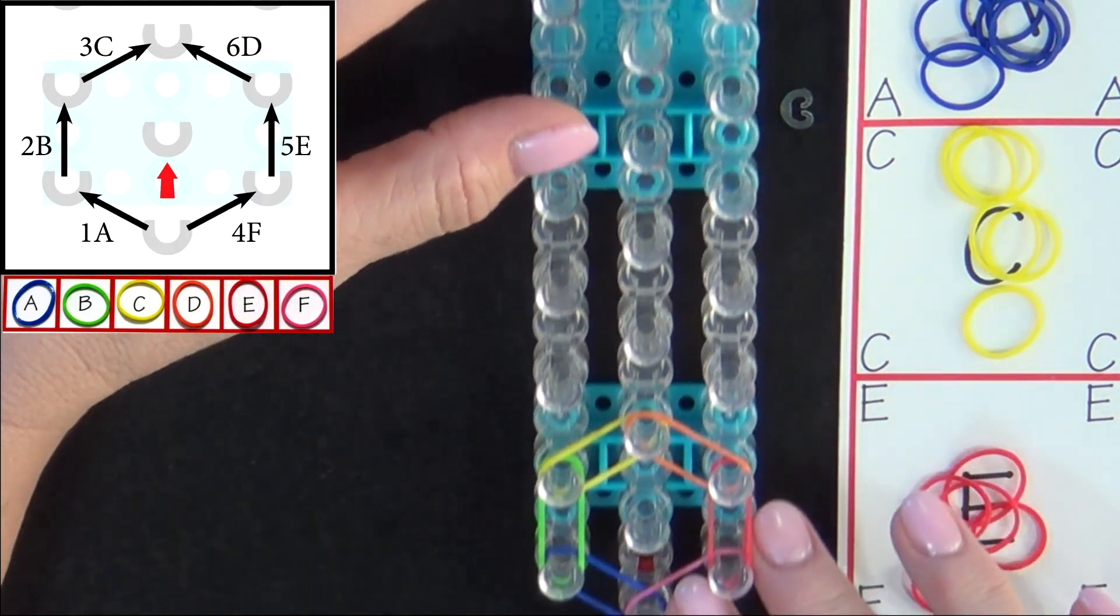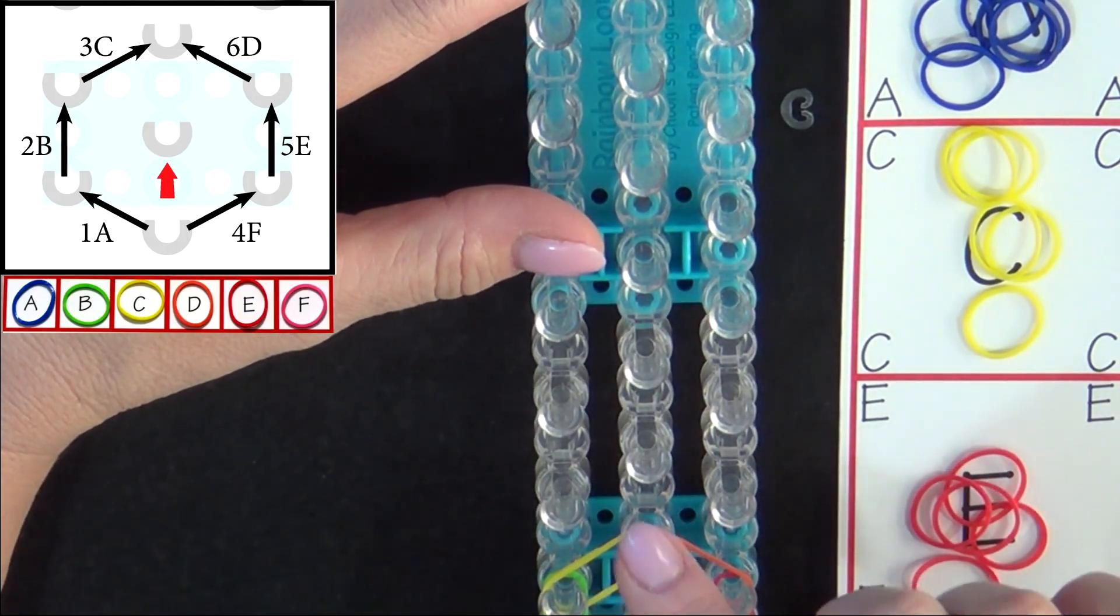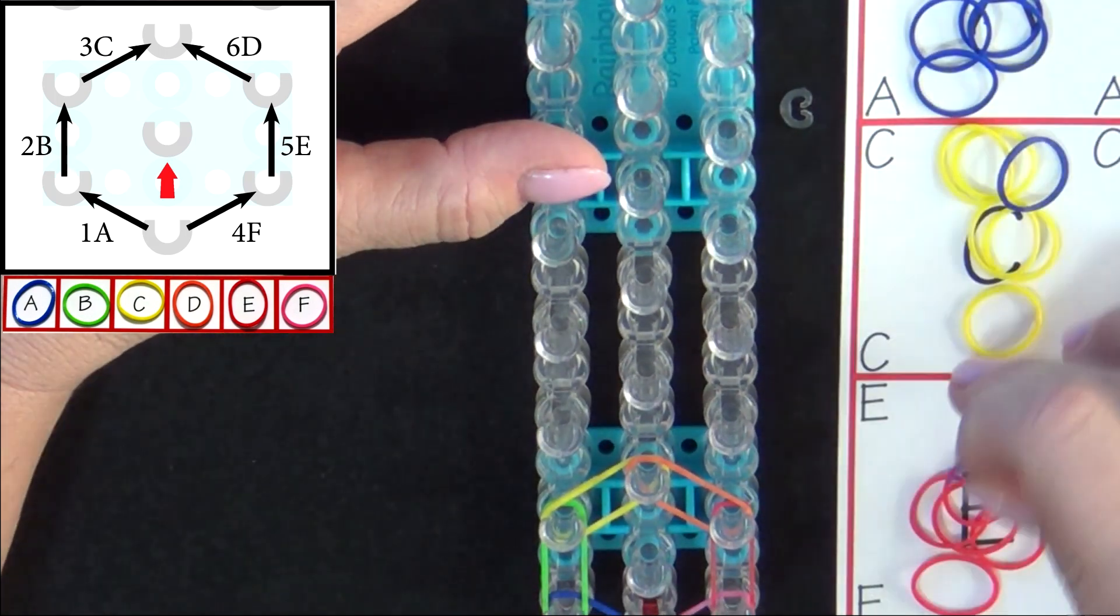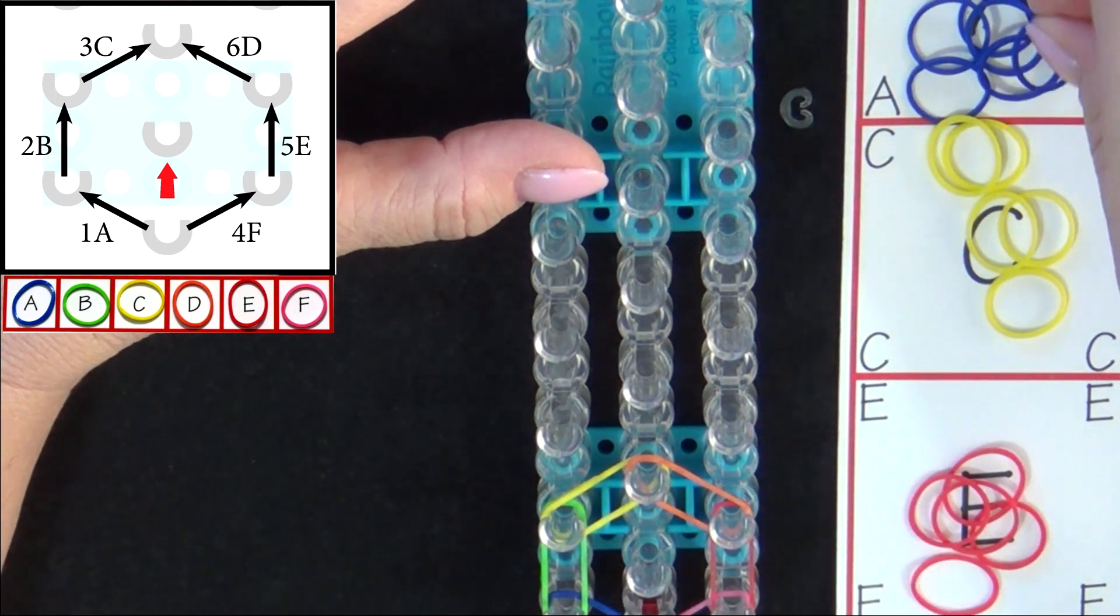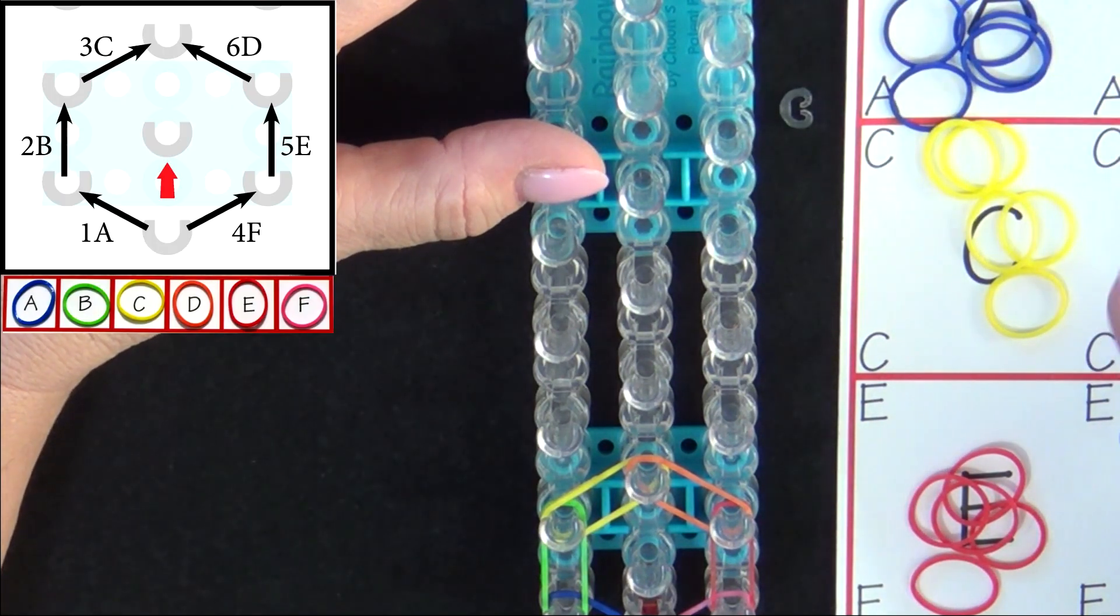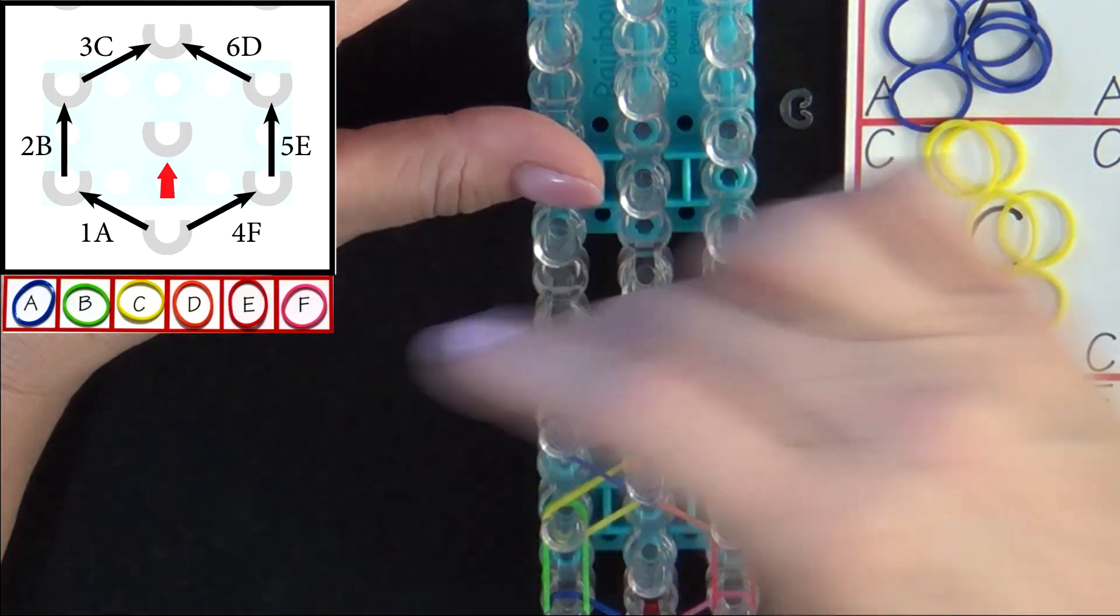I'll repeat this pattern one more time and then we'll fast forward to the end of the loom. We'll start from the end of the hexagon.